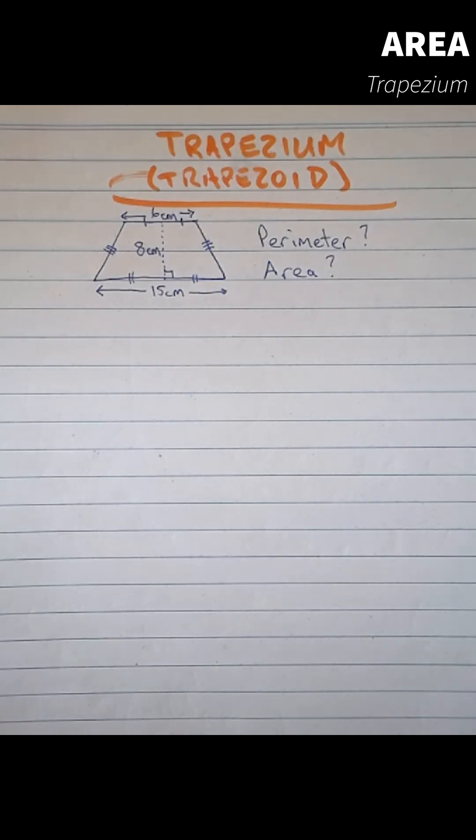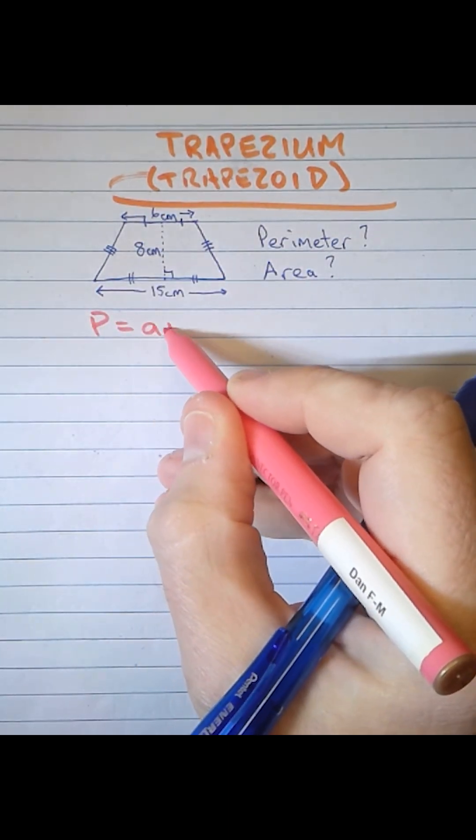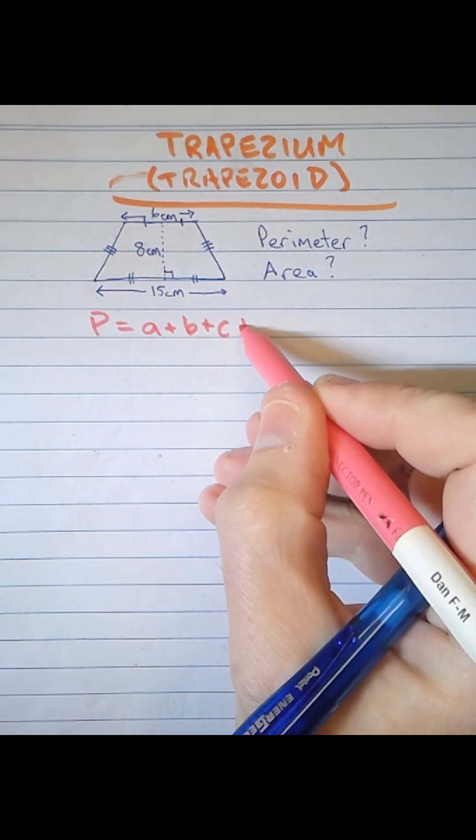Let's find the perimeter and area of this trapezium. The perimeter will be given by the sum of the four sides of the trapezium.